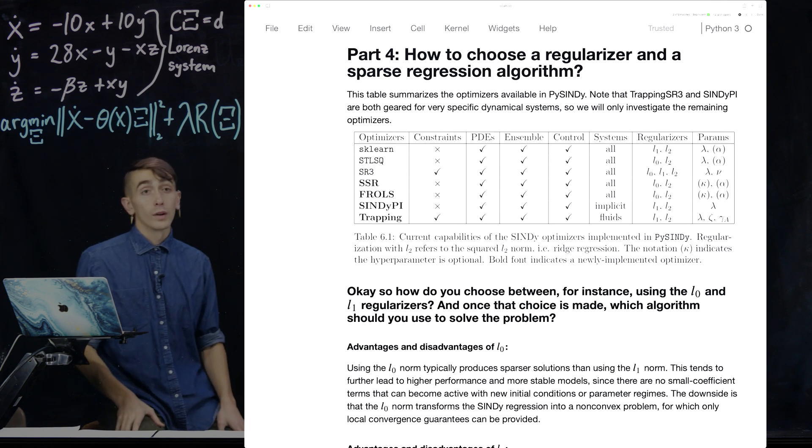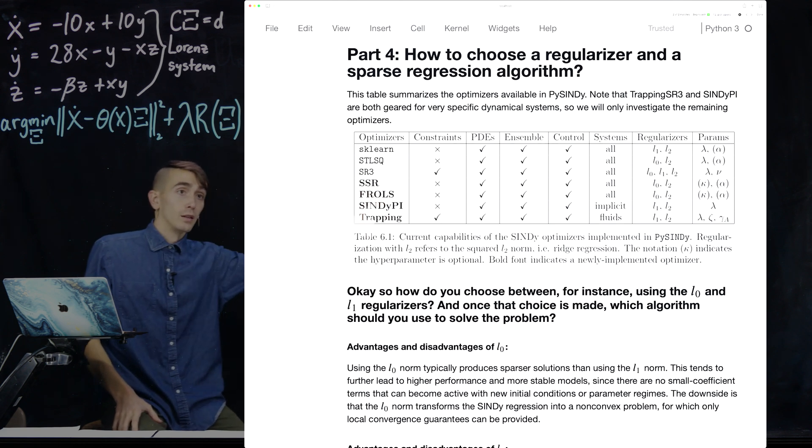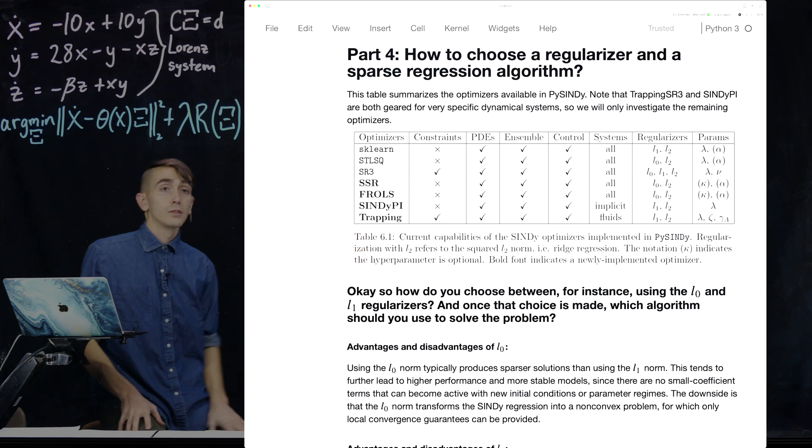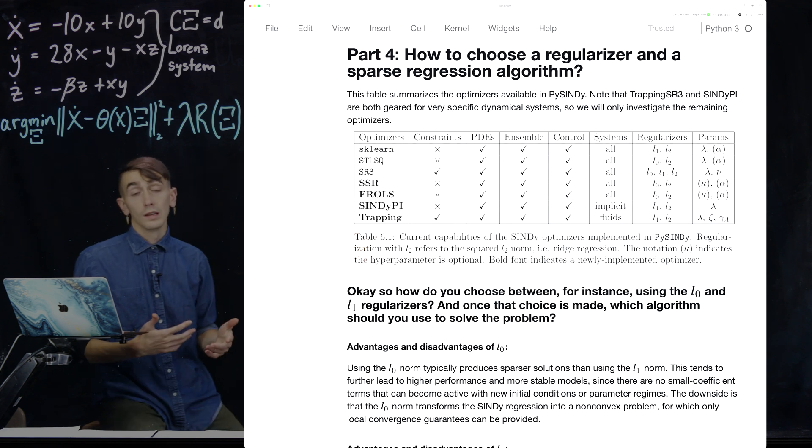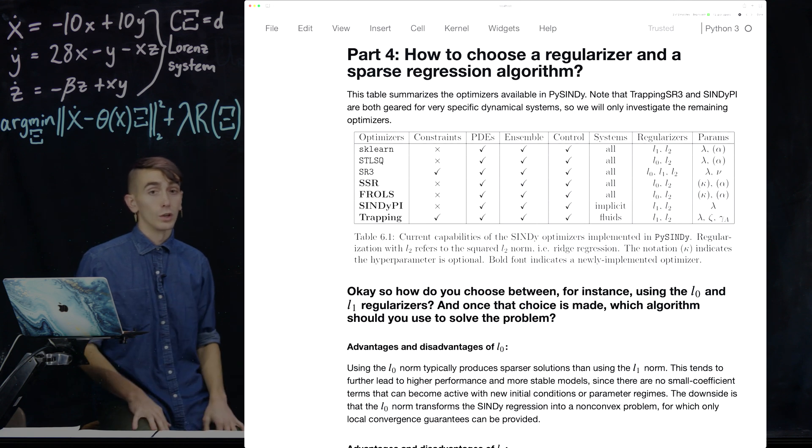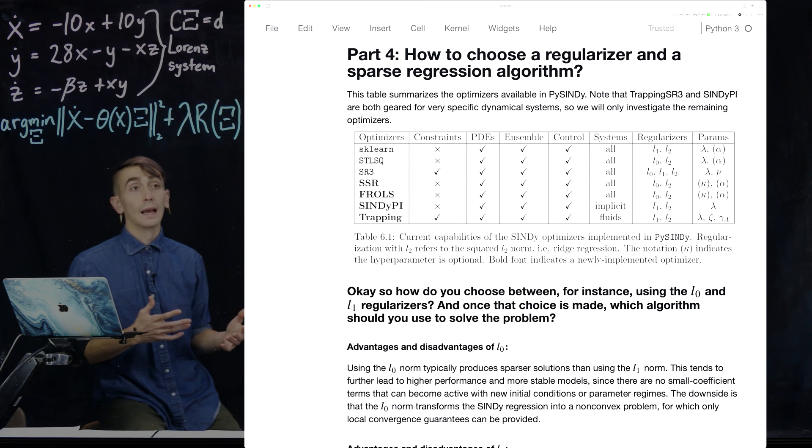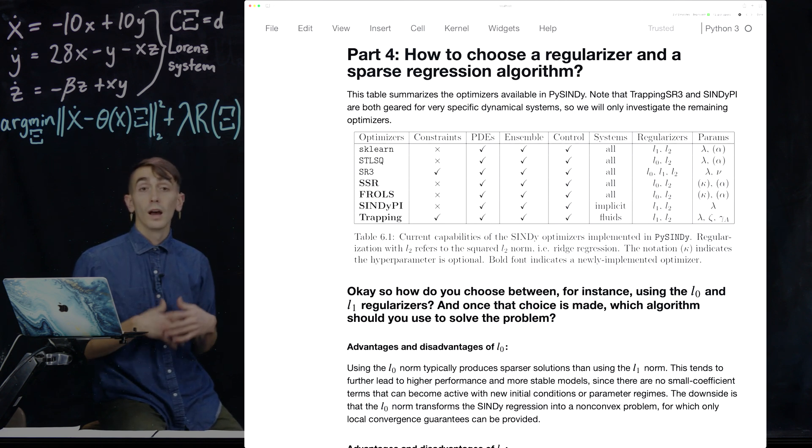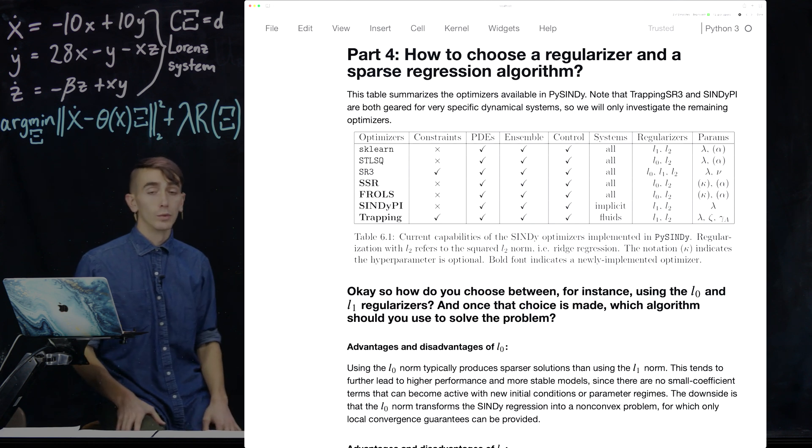So I wanted to point out a few things about it. So only the SR3 and trapping optimizers allow for equality and inequality constraints. So that's an easy choice if that's something you want to do building in physical priors. All the optimizers actually are allowed for identifying PDEs, for using the ensembling functionality I've shown, for using control inputs. So this stuff is really general and really can be used interchangeably with a lot of different methods I've shown today.